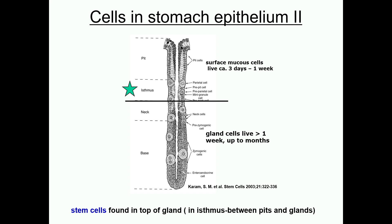That's it for the cells of the gastric epithelium. With this, we've now completed the histology of the upper digestive tract. In the next part of our overall series on the digestive system, we'll discuss the histology and special features and functions of the intestines. If you're liking these videos, please give them a thumbs up, and thanks for stopping by.